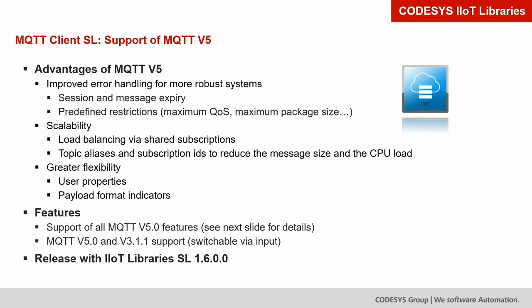With the upcoming version 1.6 of our IIoT libraries, we will add support for MQTT version 5. The library currently supports MQTT version 3.1, and you can decide which version to use in your application — it is switchable via an input of the function block instances. The library will support all MQTT version 5 features.